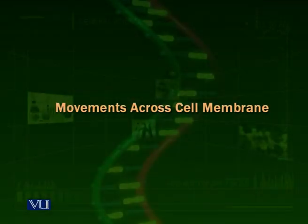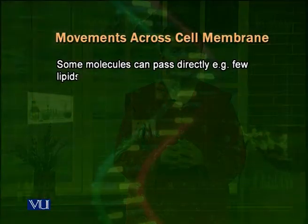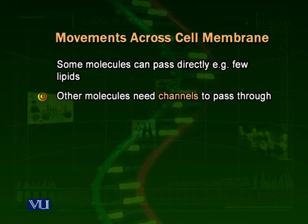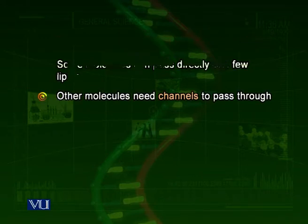Now we talk about the movements across the cell membrane. This is very important — actually one of the most important features of the cell membrane — that it is semi-permeable. It allows certain molecules to pass, it does not allow other molecules to pass, and it very technically separates the internal and external environments.